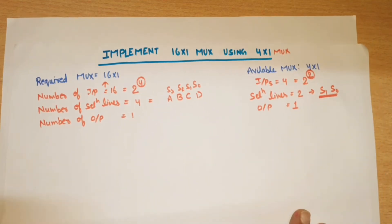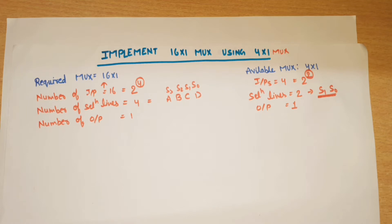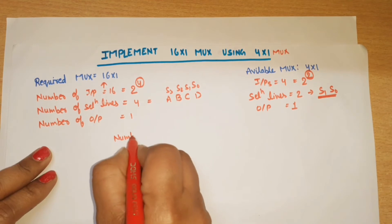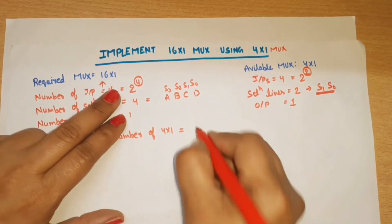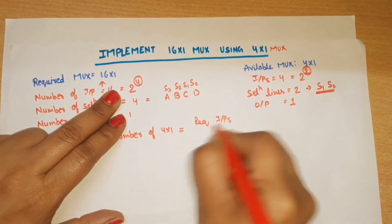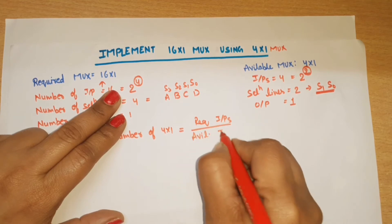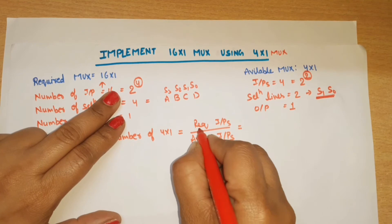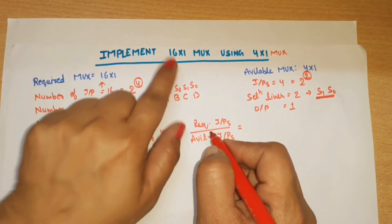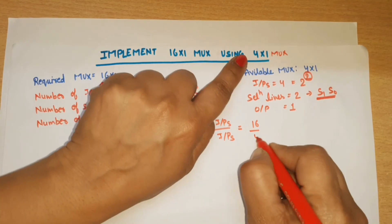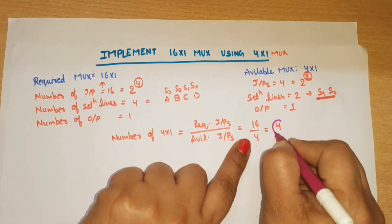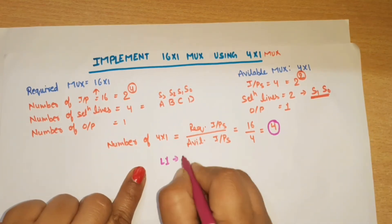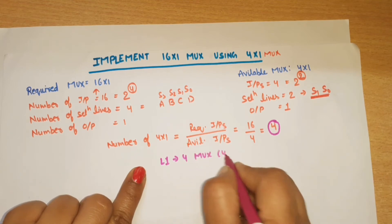Now we will find out: if we want to design a 16-to-1 mux using 4-to-1 mux, how many 4-to-1 muxes are required? The number of 4-to-1 muxes equals required inputs divided by available inputs. Required is 16, available is 4. Dividing, we get 4. So at Label 1 we will use 4 muxes.